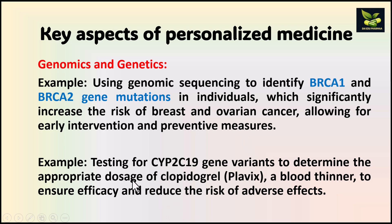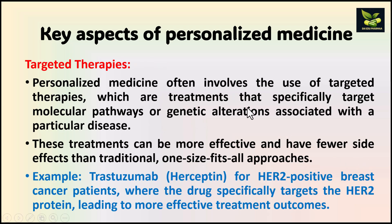Another example is testing CYP2C19 gene variants to determine the appropriate dosage of clopidogrel, a blood thinner, to ensure efficacy and reduce the risk of adverse effects. The second key aspect is targeted therapies — treatments that specifically target the molecular pathways or genetic alterations associated with a particular disease. These are very effective and have fewer side effects compared to traditional ones. An example is the drug trastuzumab for HER2-positive breast cancer patients, which specifically targets the HER2 protein, leading to more effective treatment outcomes.